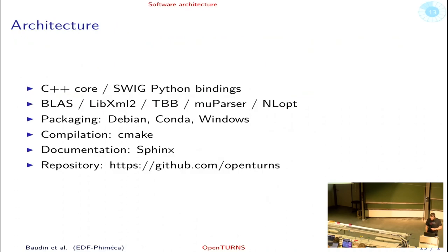Now some notes about architecture. It's not a pure Python library, but a C++ library with SWIG Python bindings. It uses standard dependencies: LAPACK, BLAS, TBB for multithreading, NLOPT for optimization, etc. Actually, we are not available on pip since it's a C++ library with many dependencies. But it's available on the main Linux distributions: Debian, Ubuntu, Fedora, OpenSUSE.